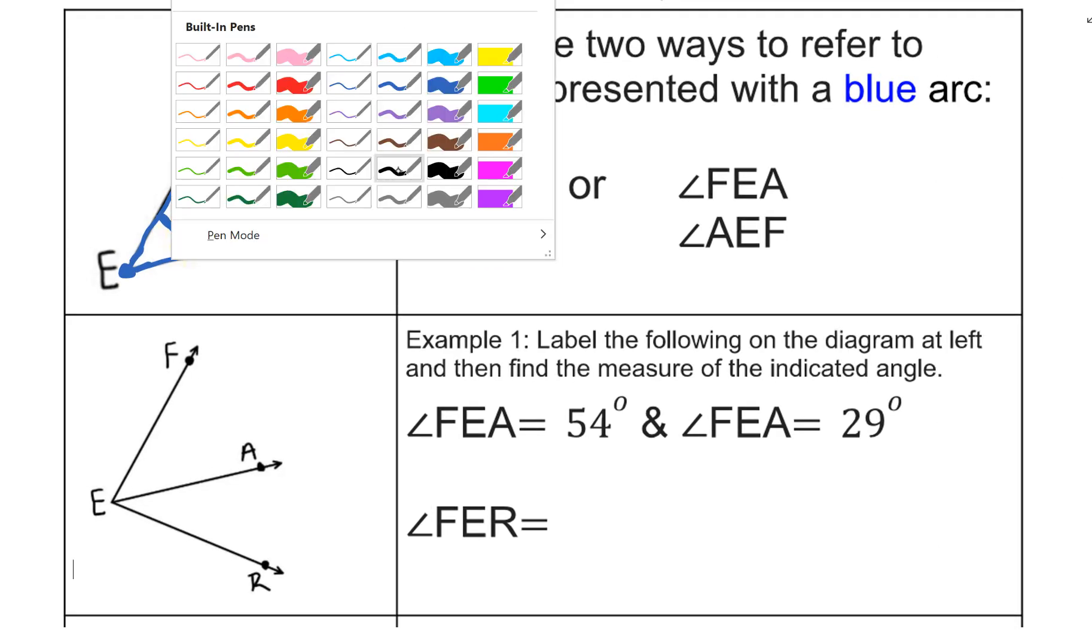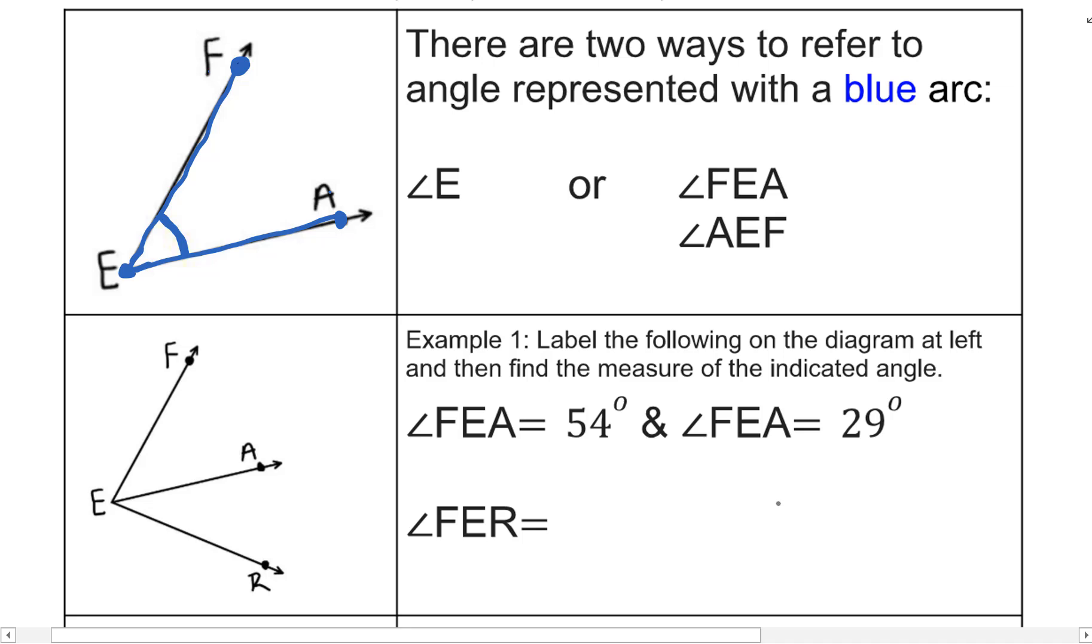Once you have a diagram with multiple angles, you're going to need to use three letters to refer to the angles rather than just one. If I say angle E, which angle am I talking about? Am I talking about this angle that has its vertex at E, this angle, or this angle whose vertex is E? That is why for most angles, we will use three letters in order to name them.